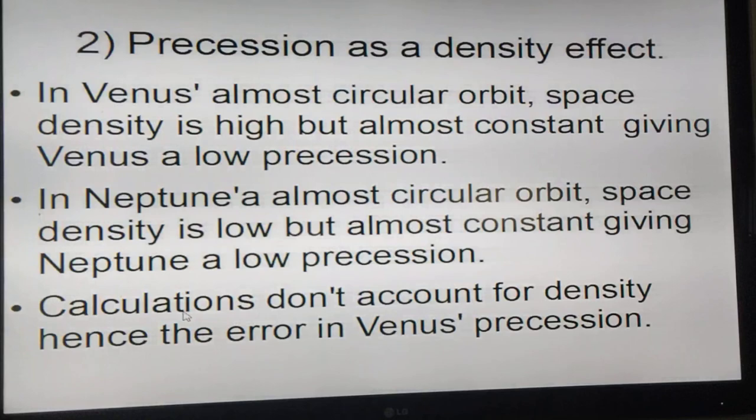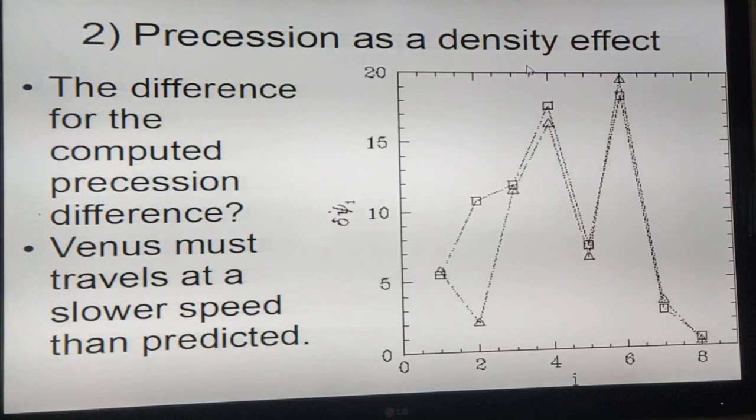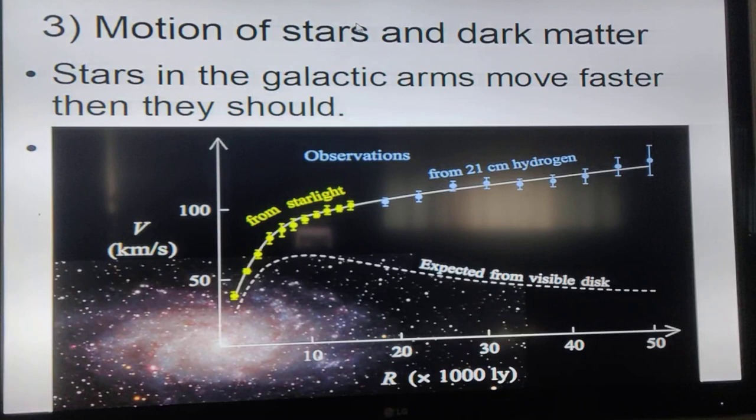Now relativity doesn't account for density. Therefore it comes up with an error for Venus and Neptune. So if the density is what's affecting it, just like light being in a toroidal shape, then Venus travels at a slower speed than it's predicted.